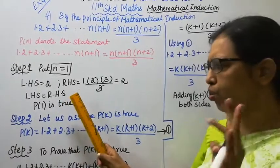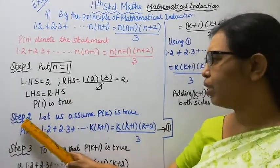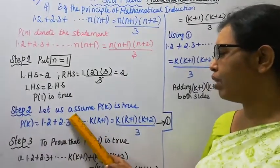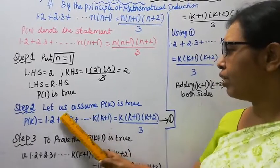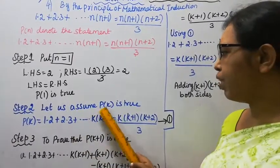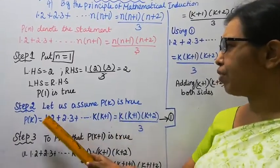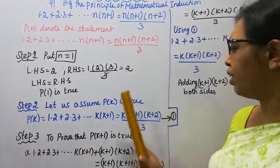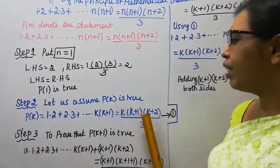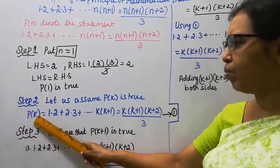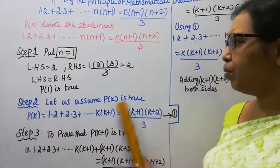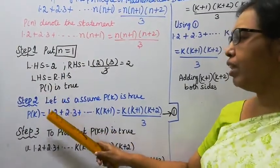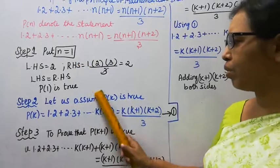Step 2: Let us assume P(k) is true. Assume P(k) is true for n equal to k.